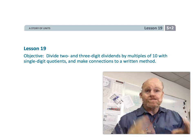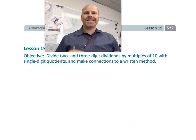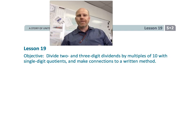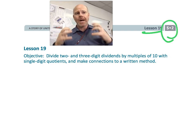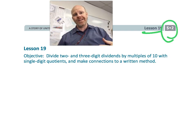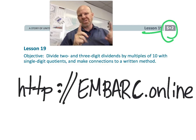And so that wraps up fifth grade, module two, lesson 19, where we are dividing two and three digit dividends by multiples of 10 with super simple quotients, just one digit.